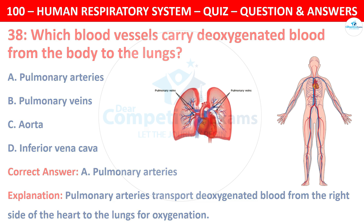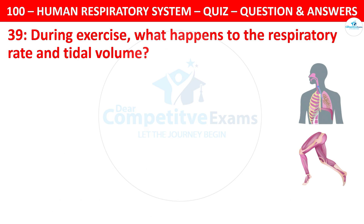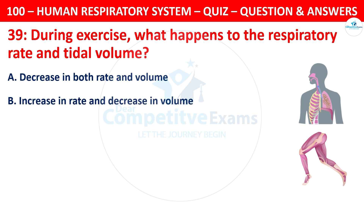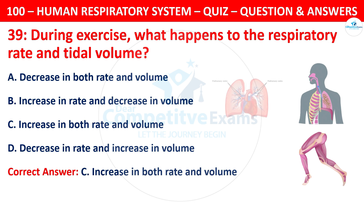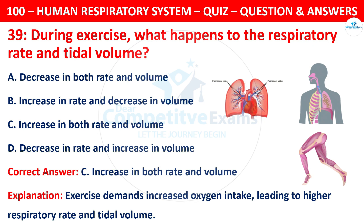Question 39: During exercise, what happens to the respiratory rate and tidal volume? The options are: decrease in both rate and volume; increase in rate and decrease in volume; or increase in both rate and volume. The correct answer is C — increase in both rate and volume. Exercise demands increased oxygen intake, leading to a higher respiratory rate and tidal volume.